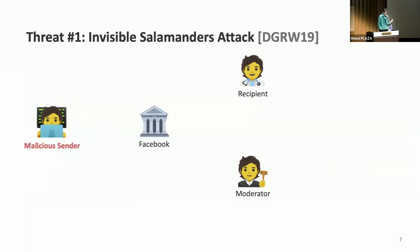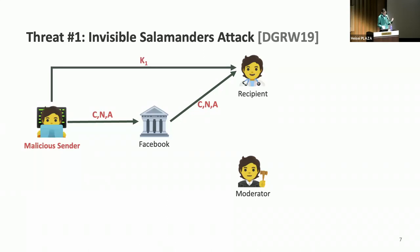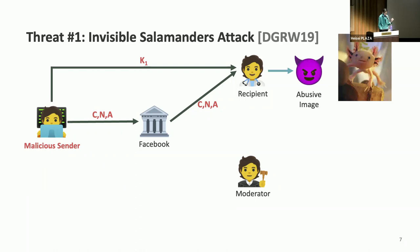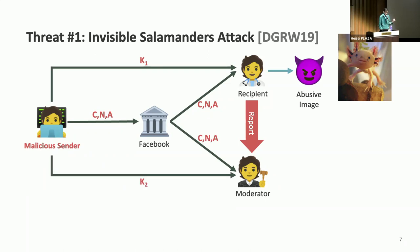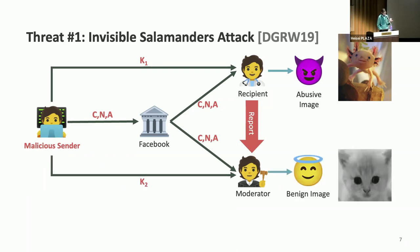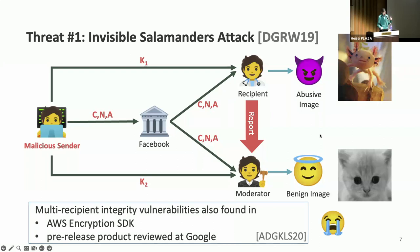To see how this affects real-world deployments, consider a simplified version of DGRW's attack on Facebook Messenger abuse reporting. A malicious sender chooses a specific ciphertext and sends it to Facebook, who forwards it to the intended recipient. The sender then sends a specifically crafted key to the intended recipient, under which the ciphertext decrypts to an abusive image. The recipient, alerted by the image, reports it to the moderator, who gets a copy of the ciphertext from Facebook. Then the malicious sender sends a different key to the moderator, under which the ciphertext decrypts to a benign image. This does not break encryption — it clearly breaks abuse reporting. Similar multi-recipient integrity attacks have been found and patched in the AWS Encryption SDK and in a pre-release product reviewed at Google.